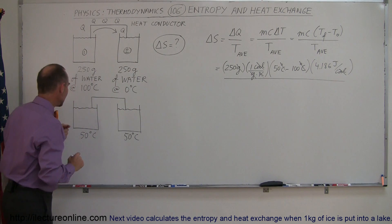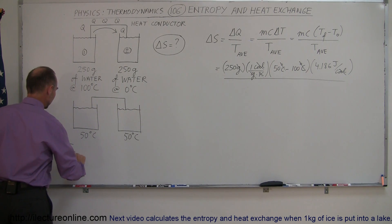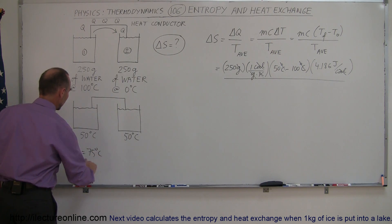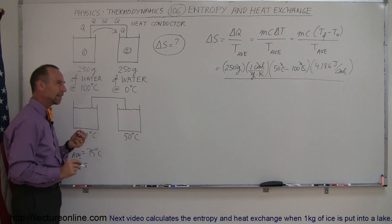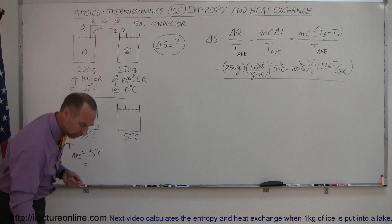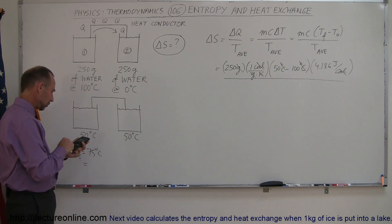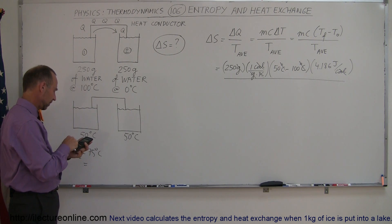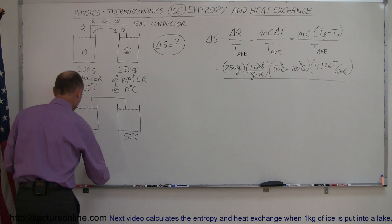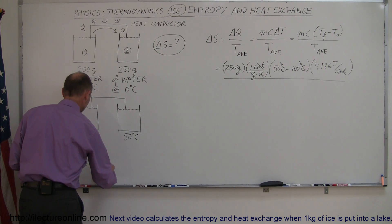Now, the average temperature would be, let's see here in this case, T average would be equal to 75 degrees centigrade, which converted to Kelvin, we have to add that to 273. So, let's make sure we get that right, 273 plus 75, that would be 348 Kelvin.